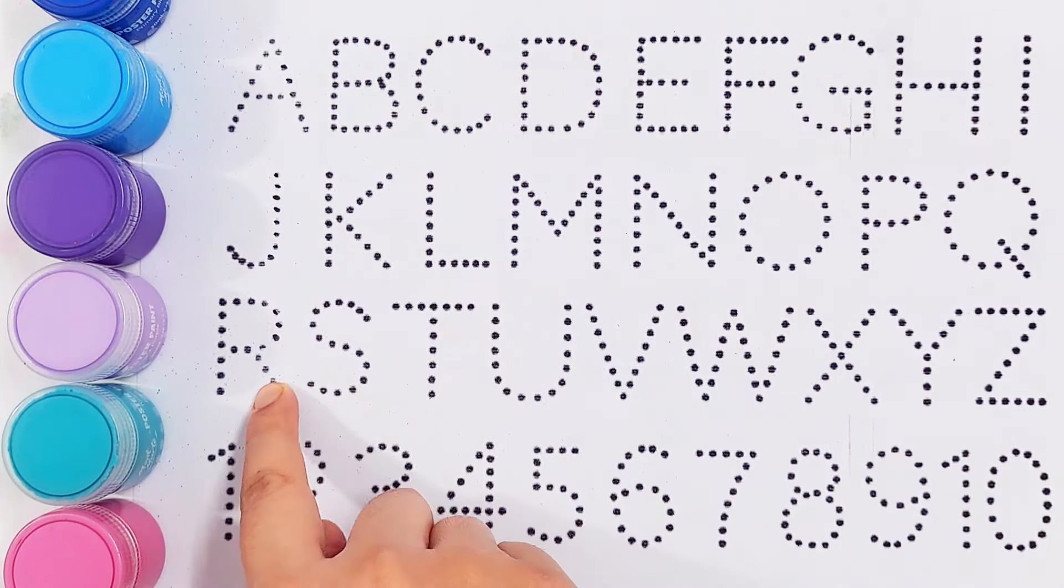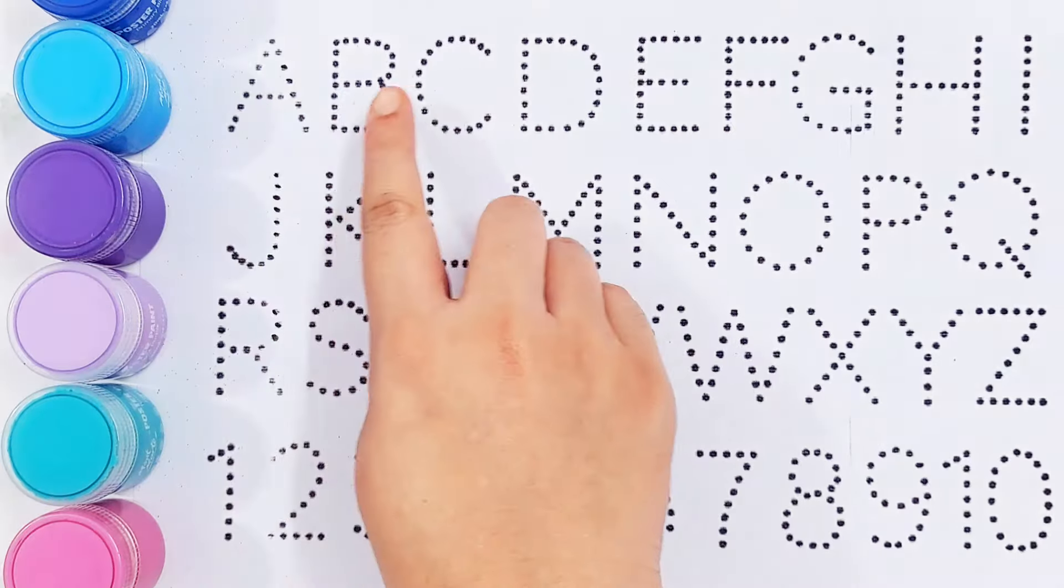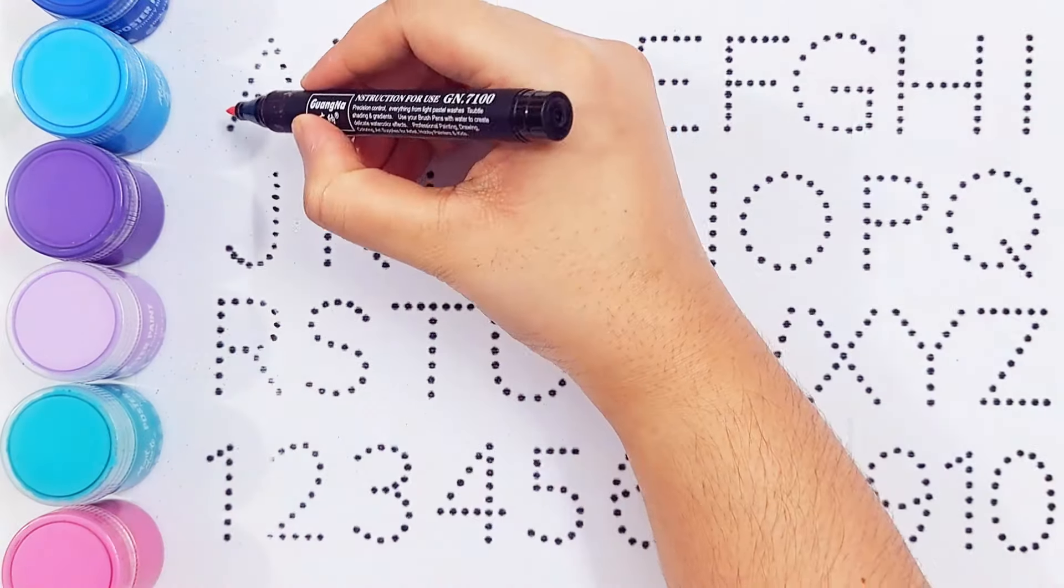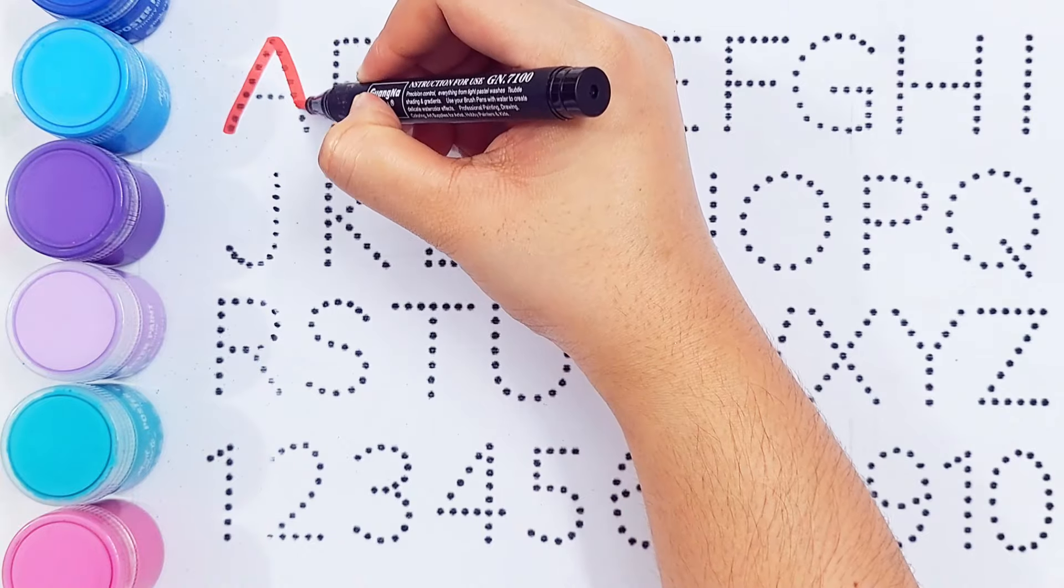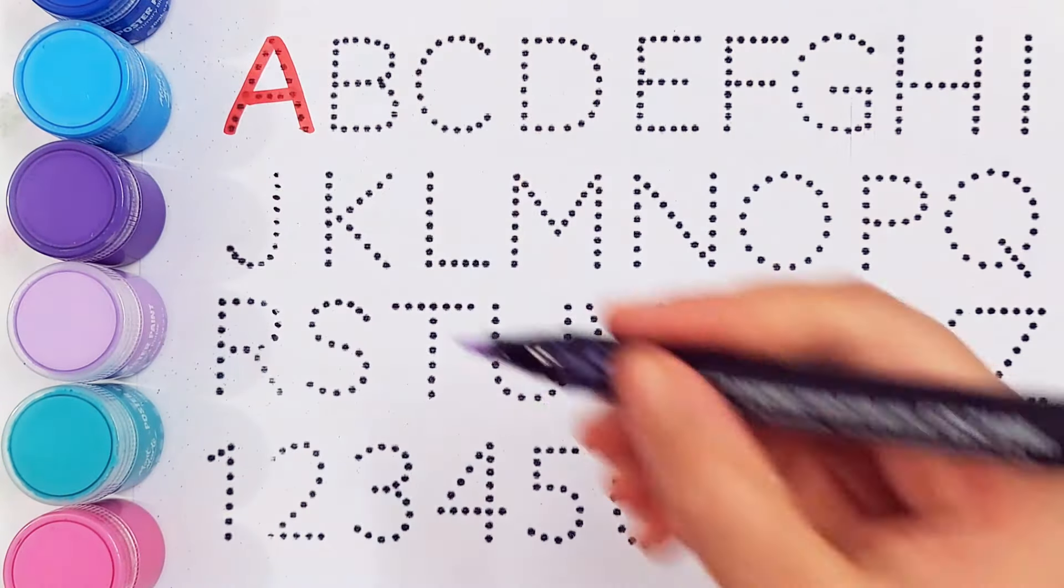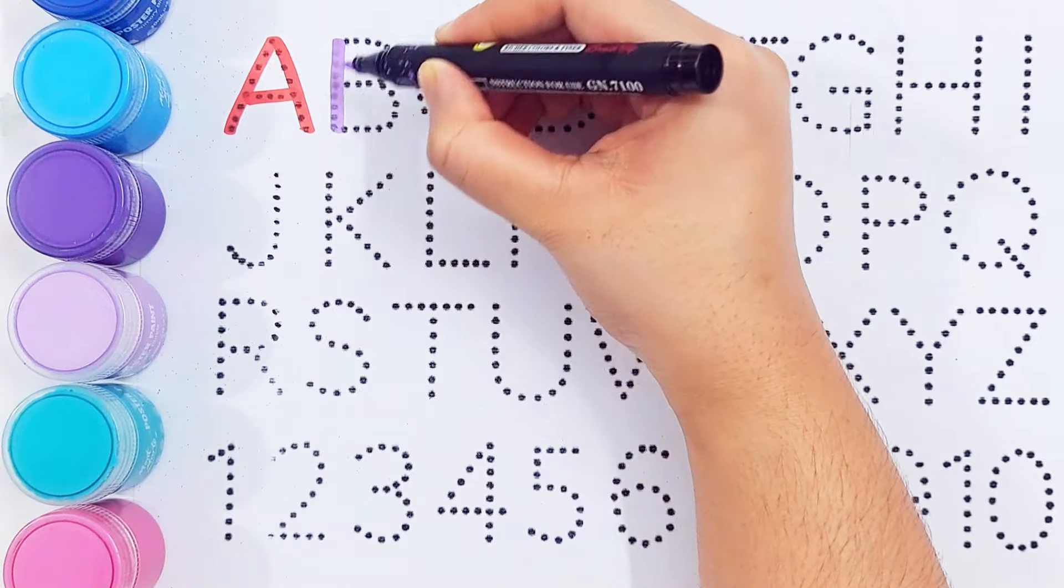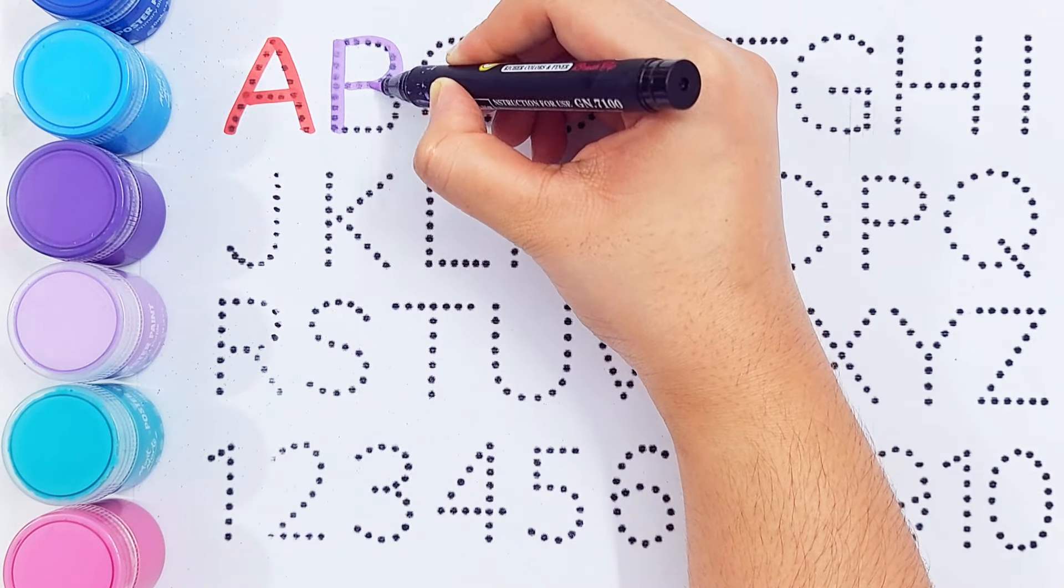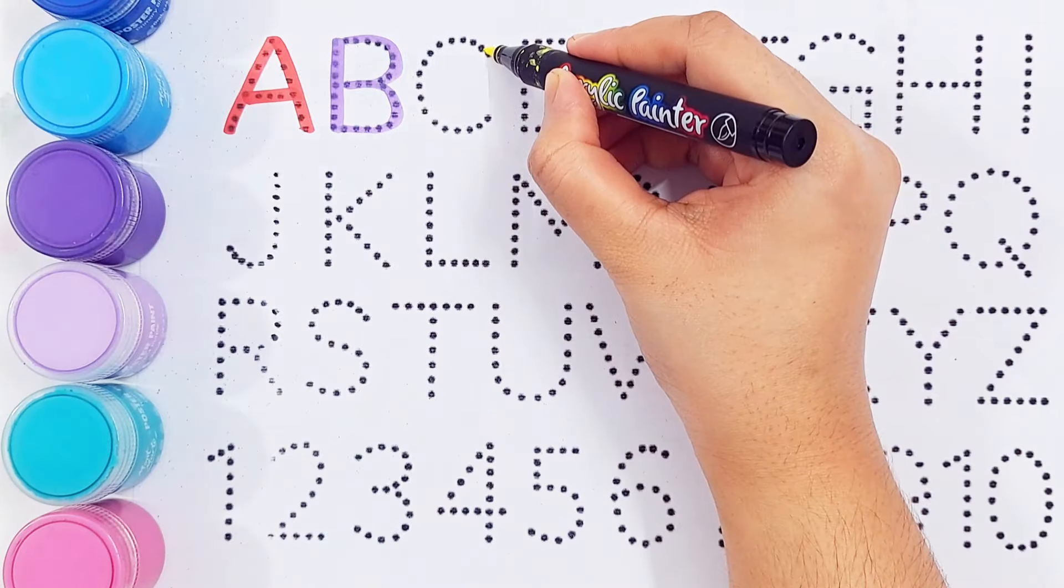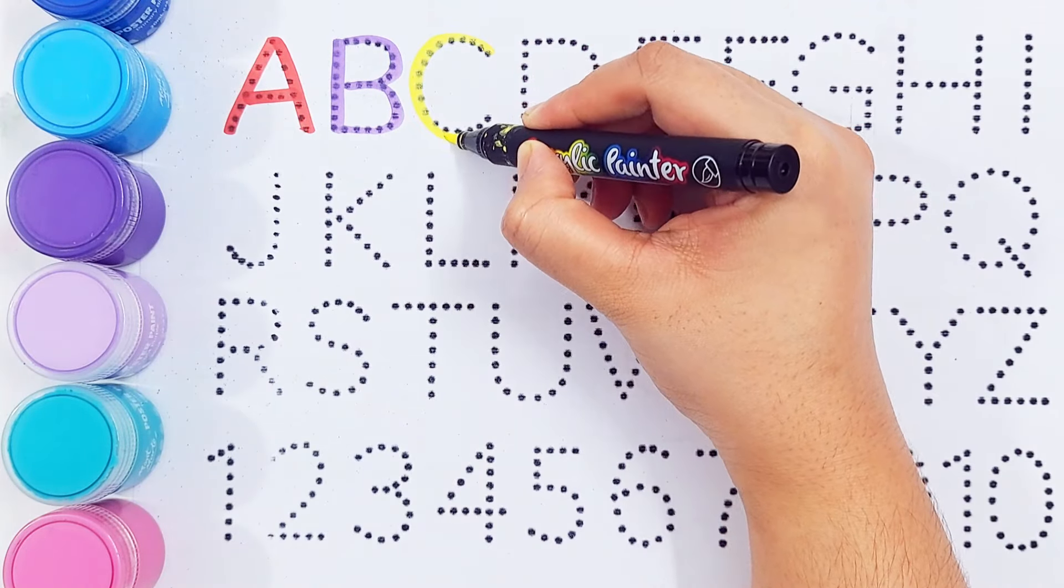Today we will try to learn some alphabets: A, B, C, D. A, A for ant. B, B for butterfly. C, C for chocolate.